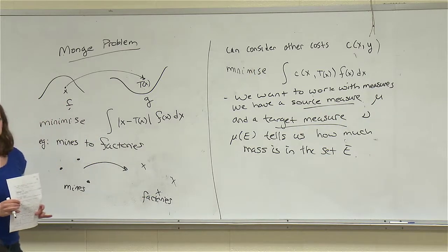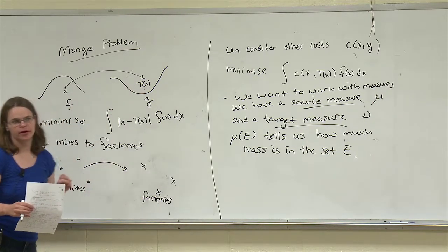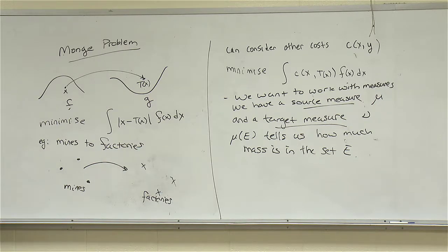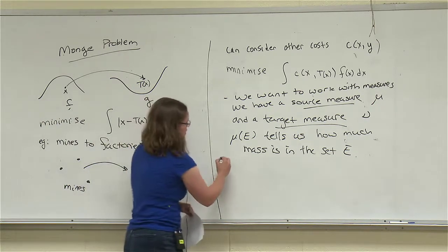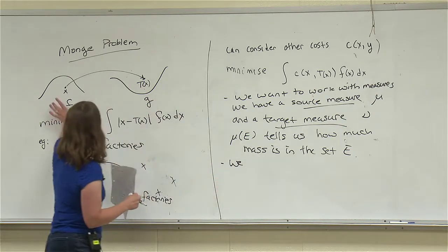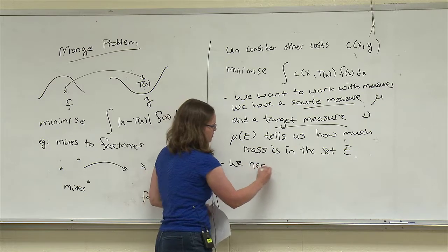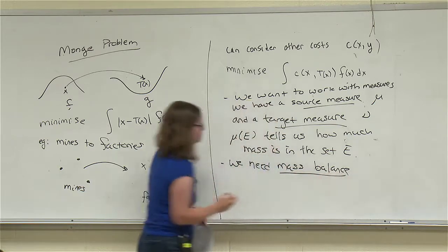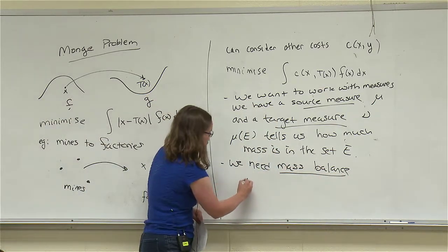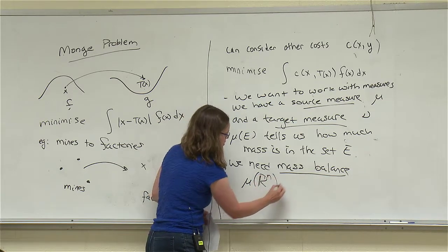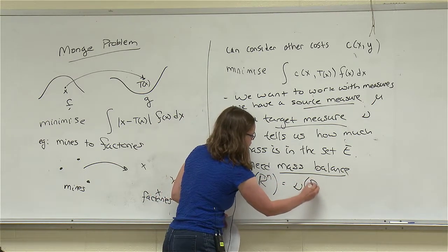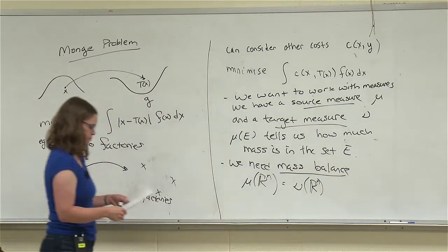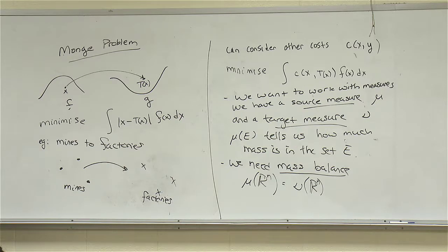We're going to require mass balance. When I'm transporting my sand or whatever I'm transporting, I'm just moving it — not creating it or destroying it. So the total amount of mass in the source has to equal the total amount in the target. This means mu of R^n equals nu of R^n. In a lot of problems we assume the total mass equals 1, so often these are interpreted as probability measures, but it's not critical that it be 1.